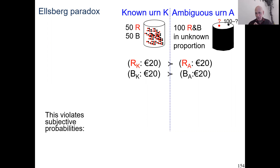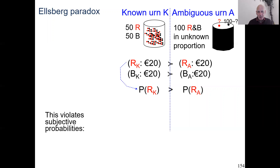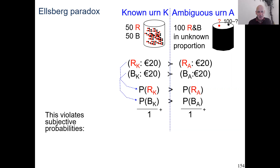Now comes the reasoning. Assume for contradiction that the decision maker is using a model based on subjective probabilities. The first choice, just by stochastic dominance, is already enough to conclude that the probability of red from the known urn must be bigger than the probability of red from the ambiguous urn — because you're going to take the biggest probability of getting the prize. The colors of black give a similar inequality. Now we note that the two left probabilities are complementary — they add to one — and the two right probabilities also add to one. And then we have a contradiction: two big numbers cannot give the same sum as two small numbers. We have a violation of subjective probabilities.